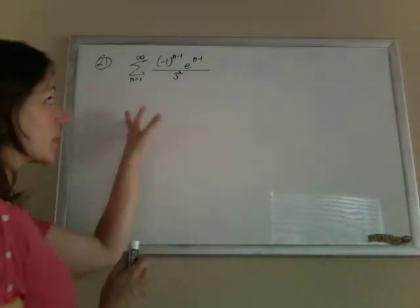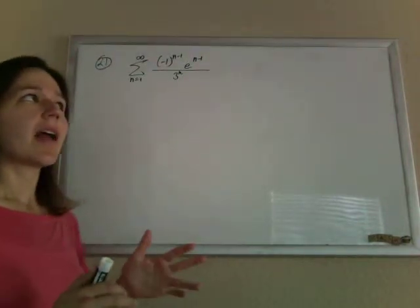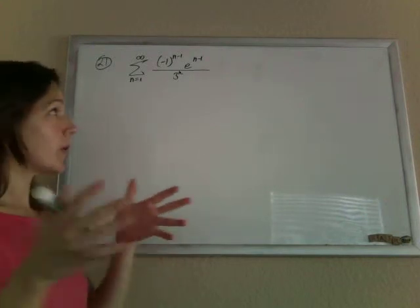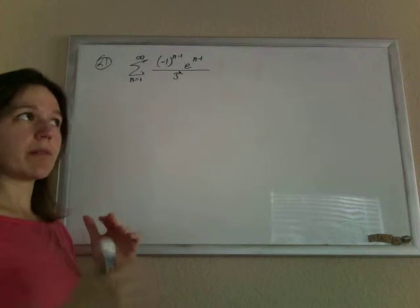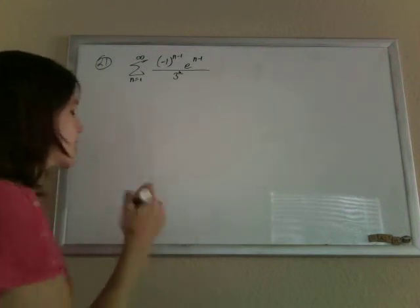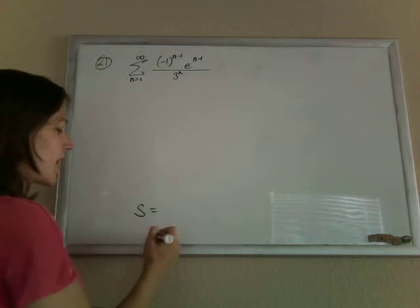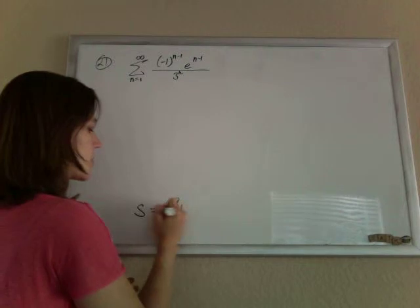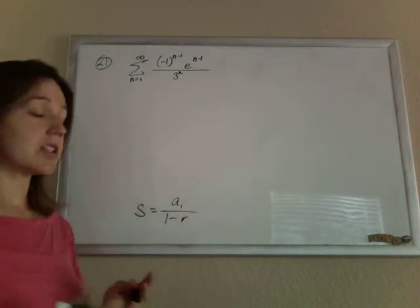All right, so they want us to find the sum of this infinite series. At this stage in our math life, we don't know how to find the sum of many infinite series unless, of course, it's geometric. If it's geometric, remember, we have that handy formula that the sum of an infinite series is the first term divided by 1 minus the common ratio, where the common ratio is what you're multiplying by every time.